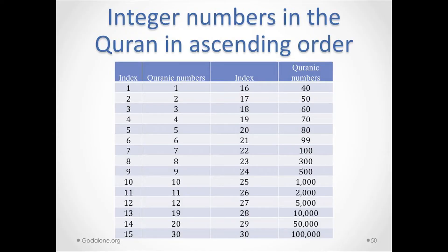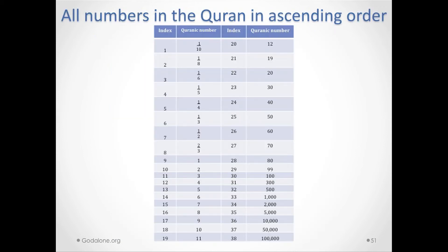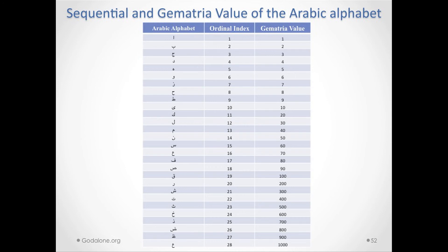Altogether there are 30 integers in the Quran — the smallest is 1 and the largest is 100,000. If you also add the fractions, there are 8 fractions in the Quran, and adding those to the integers gives 38 numbers total in the Quran, without repetition. The Arabic alphabet has 28 letters, and these are their grammatical values.